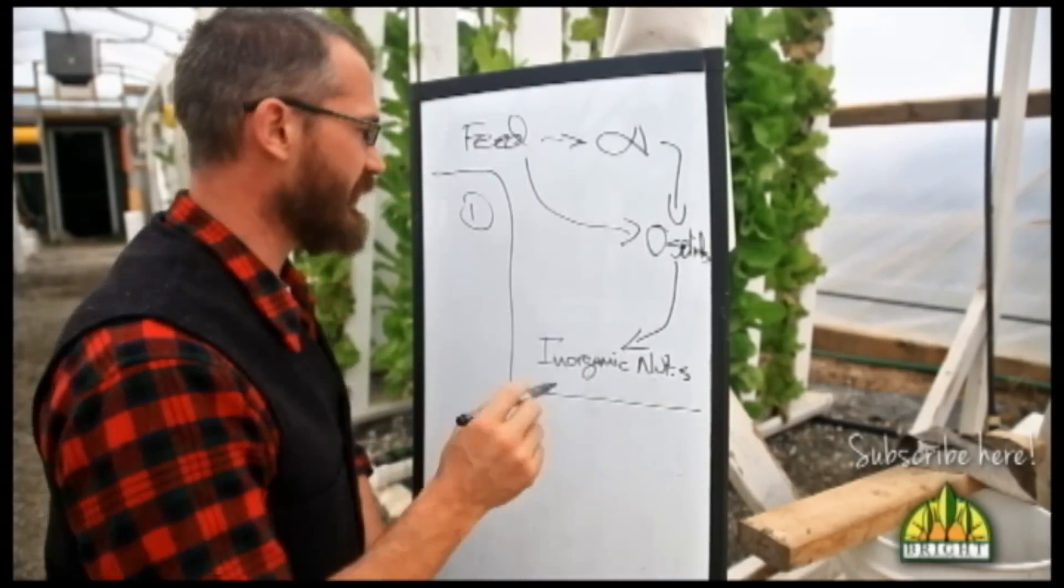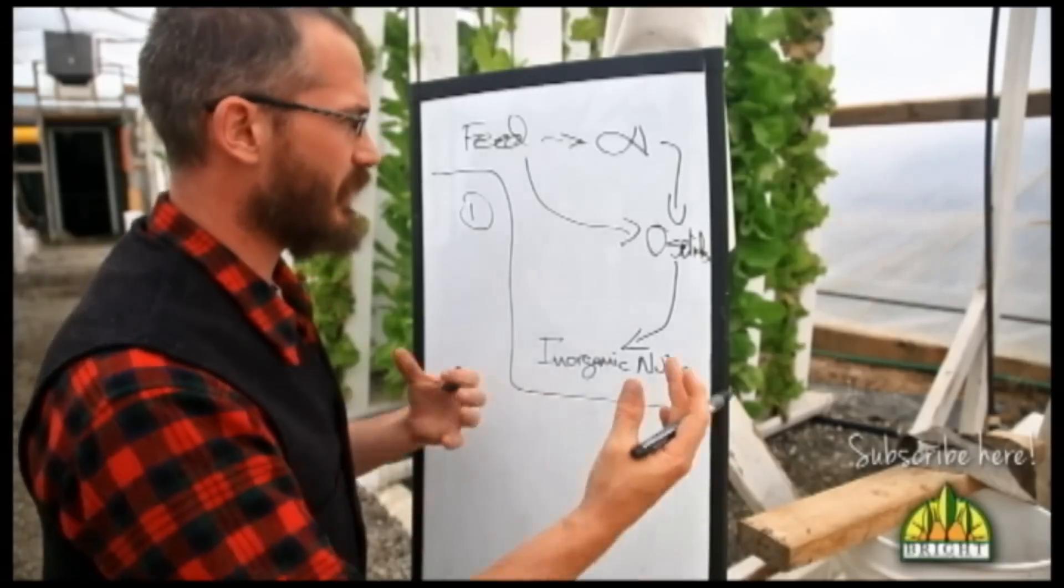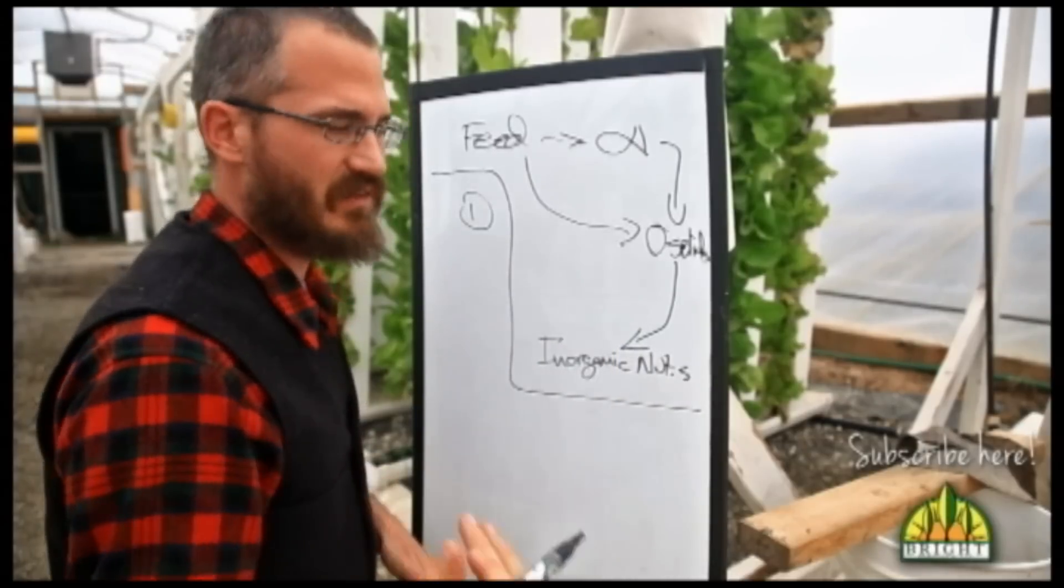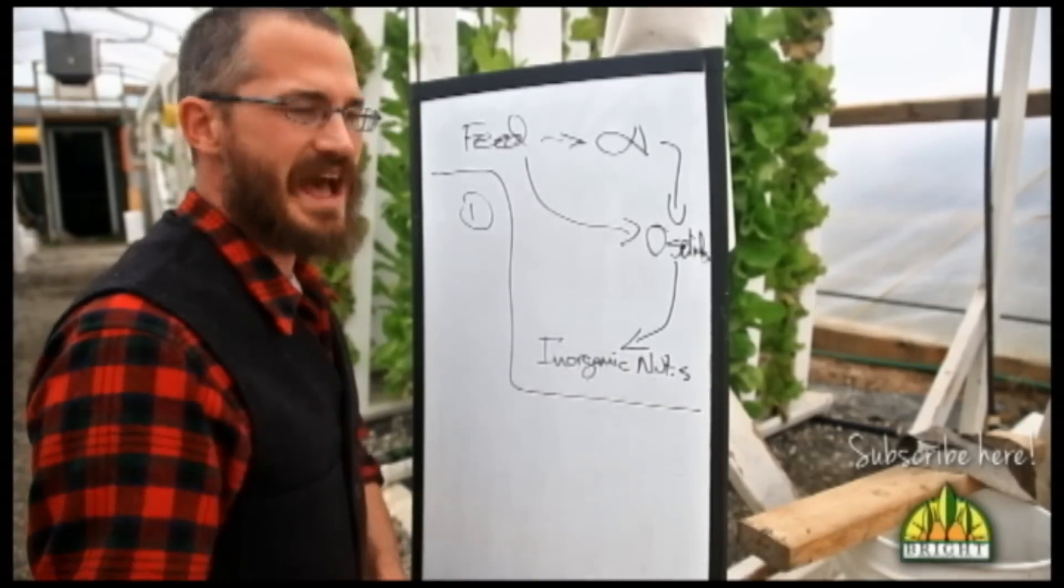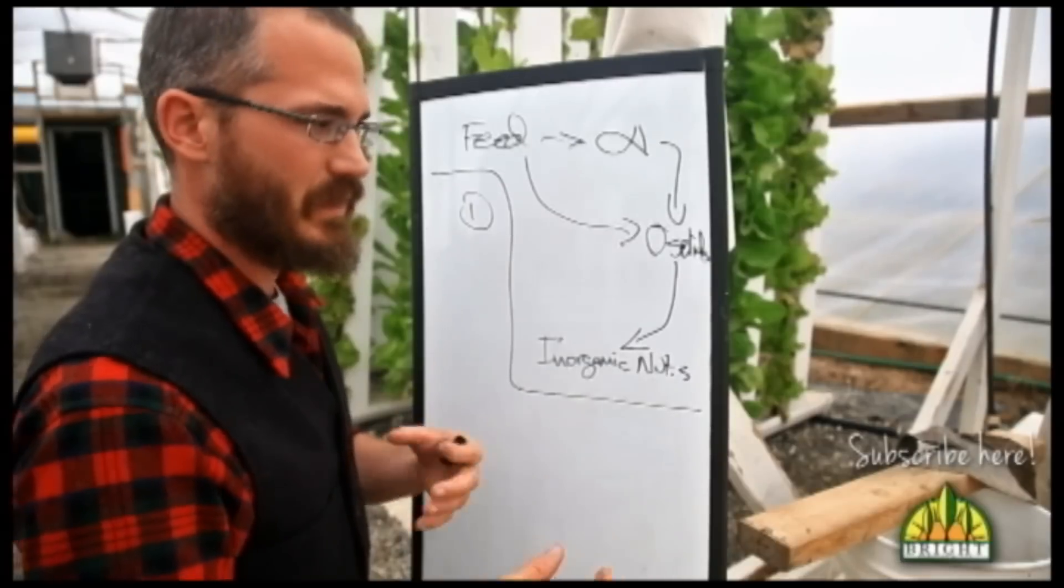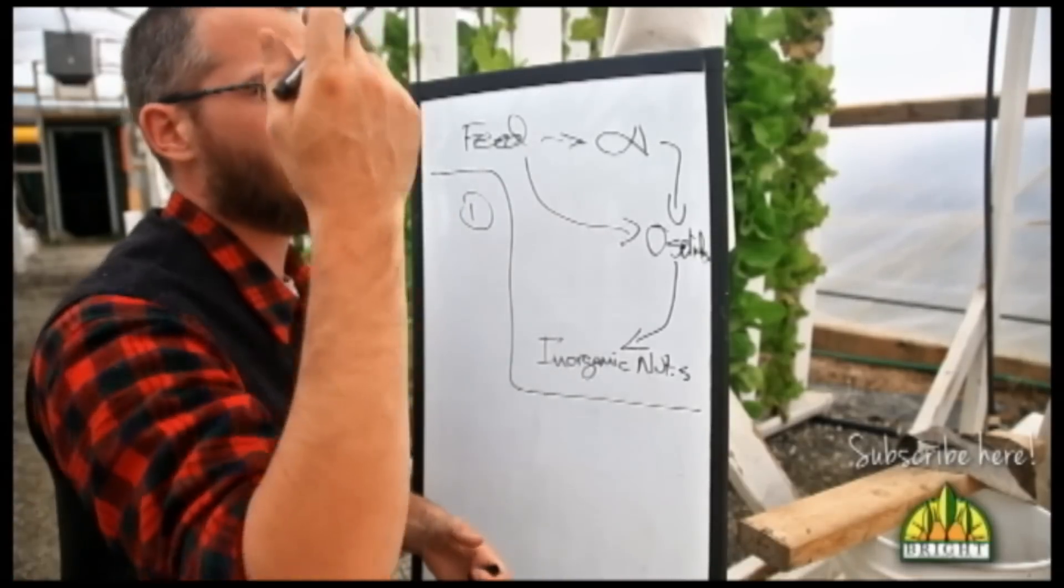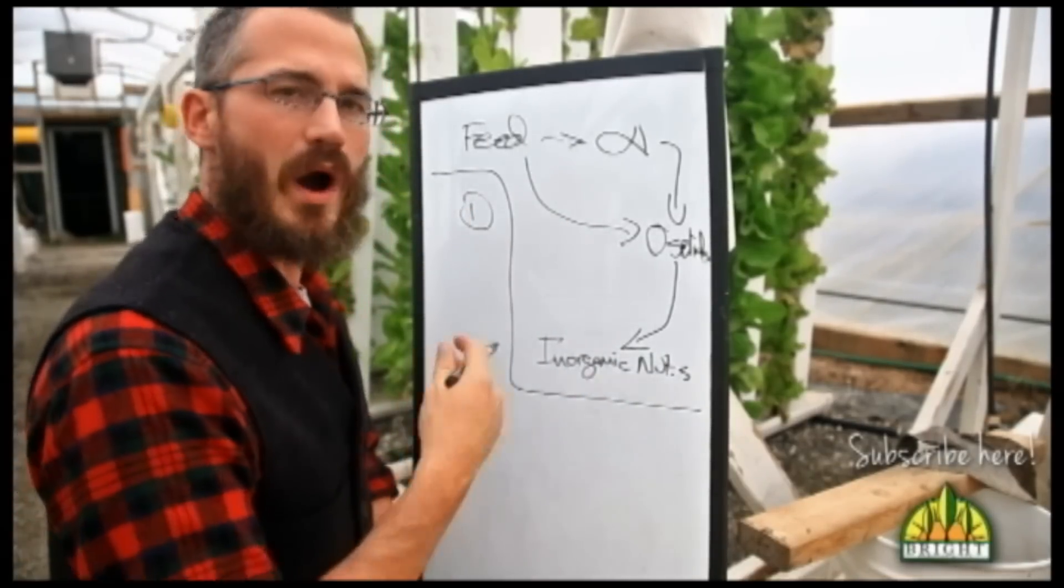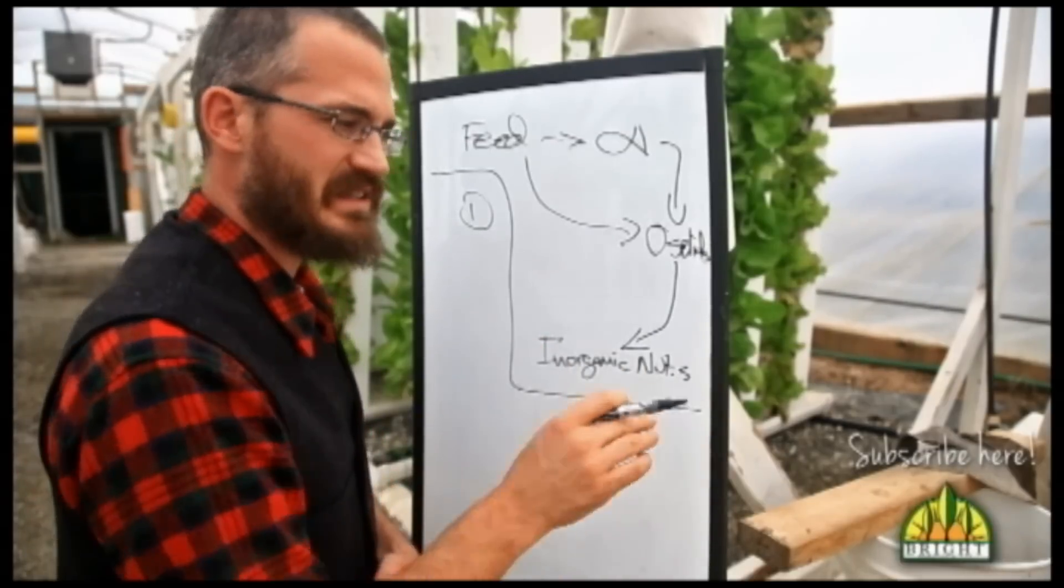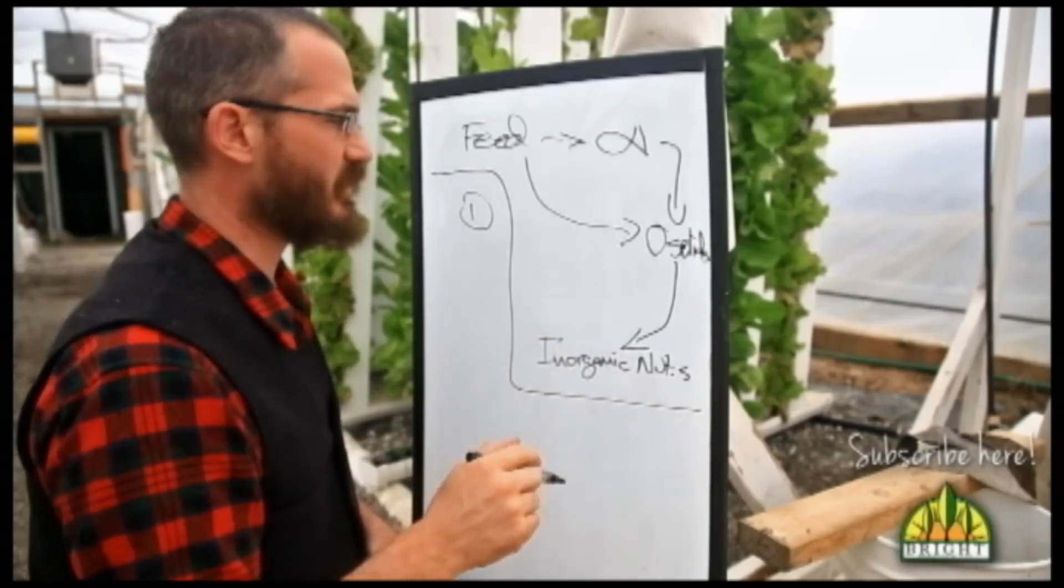So ways that it can leave the system are: if it's a nutrient that the fish assimilates and we harvest the fish, it's gone, it's out of the system. If it degasses, so if it's a chemical that turns to gas and goes into the atmosphere, it's gone from the system. If water dumps out on the floor and it contains these nutrients, it's gone from the system.